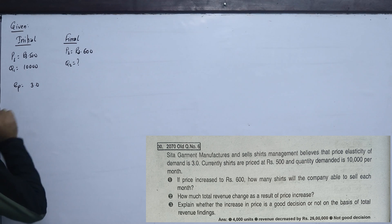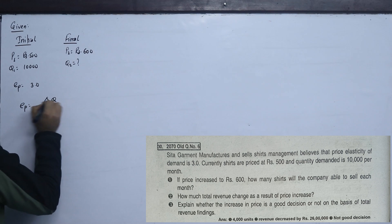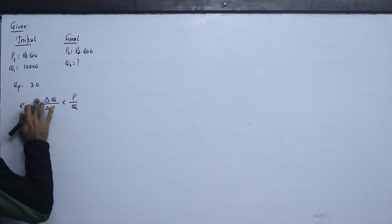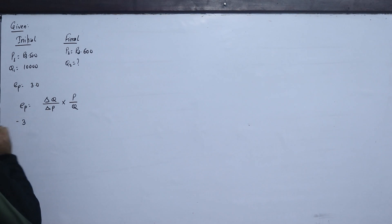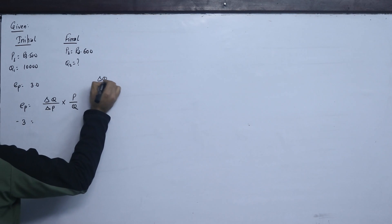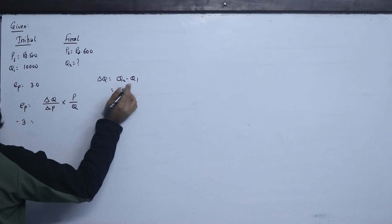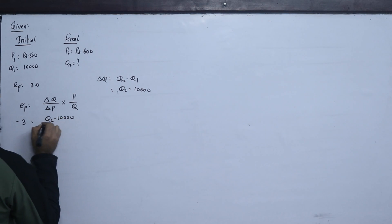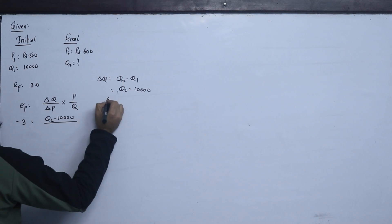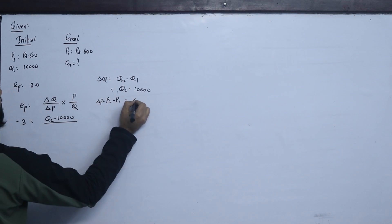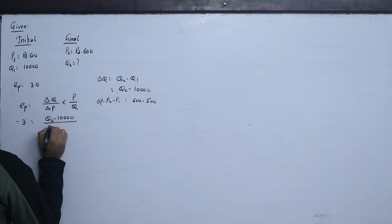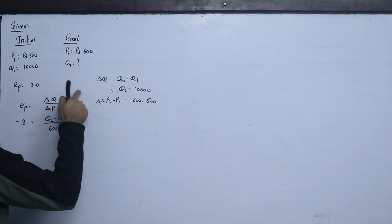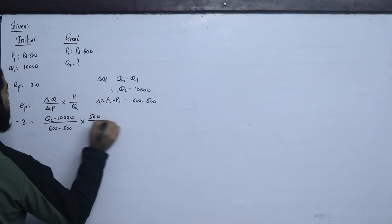Now applying the formula: Ep = (ΔQ / ΔP) × (P / Q). With the minus sign, minus 3 equals (Q2 − Q1) / ΔP, where ΔP = 600 − 500 = 100, multiplied by the initial P1 / Q1 = 500 / 10,000.